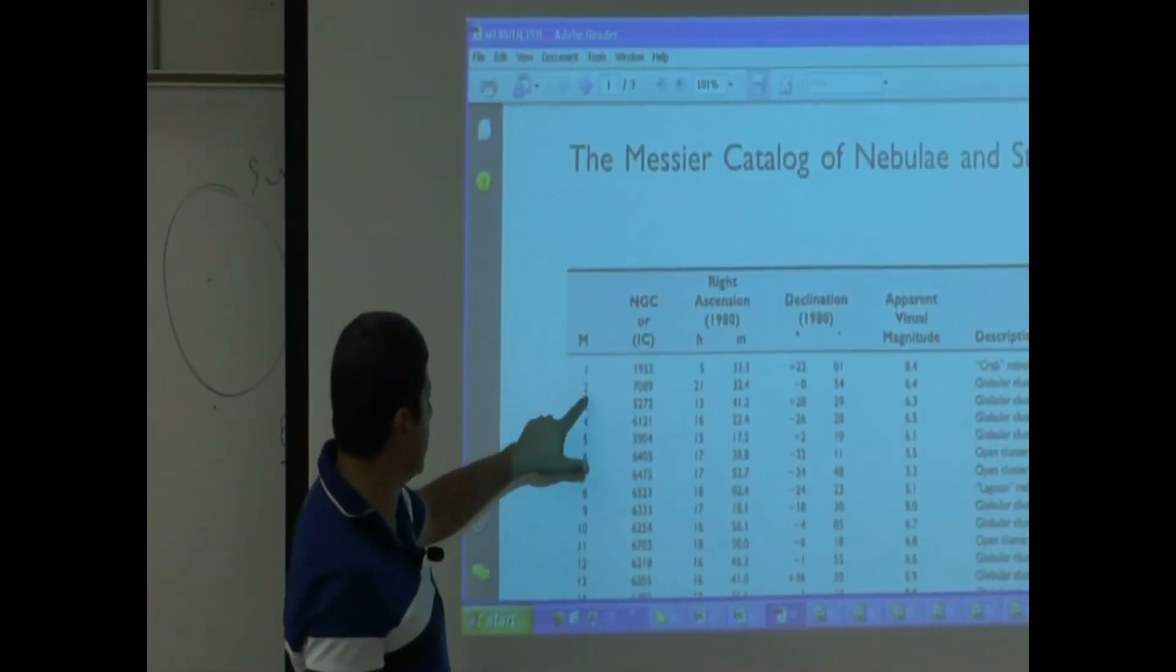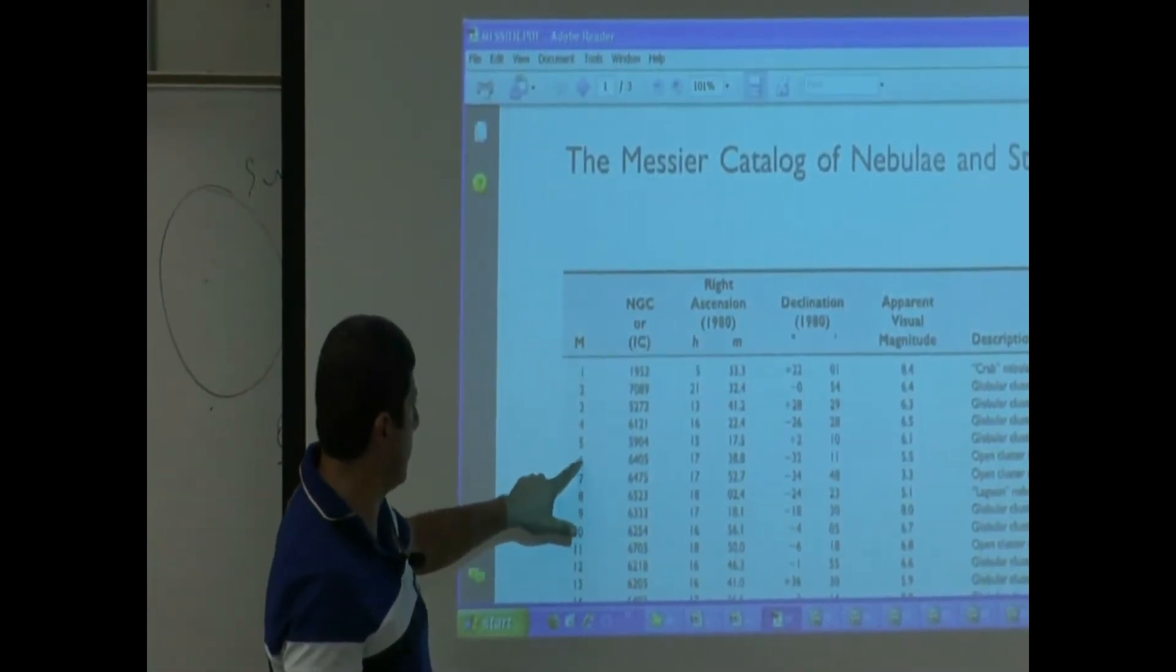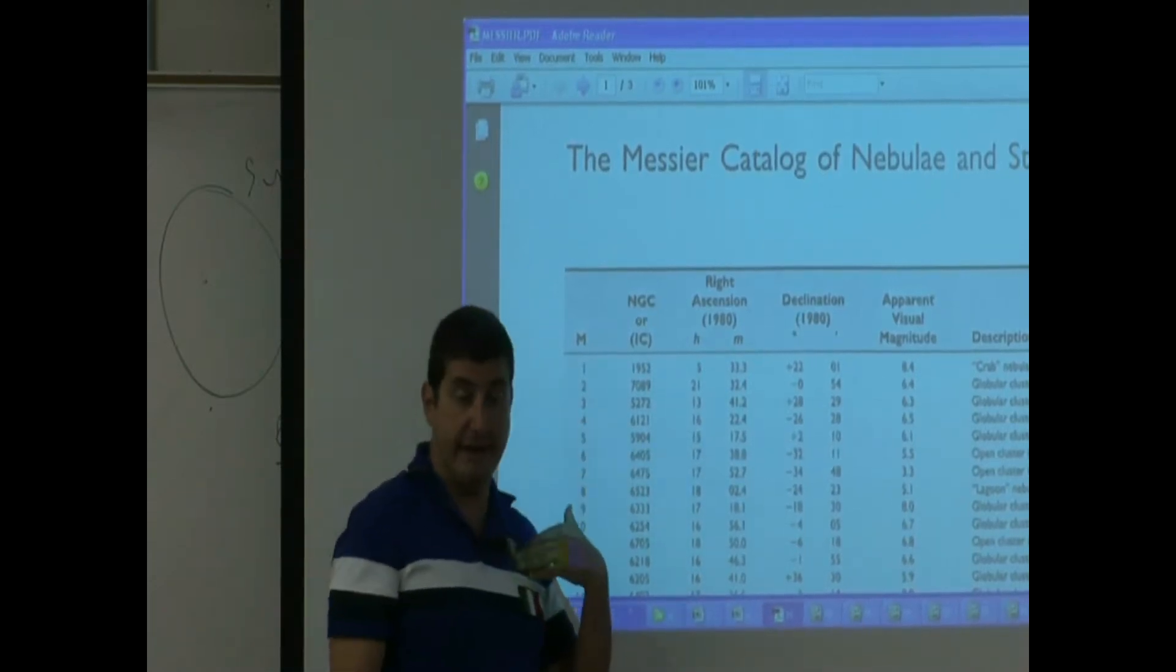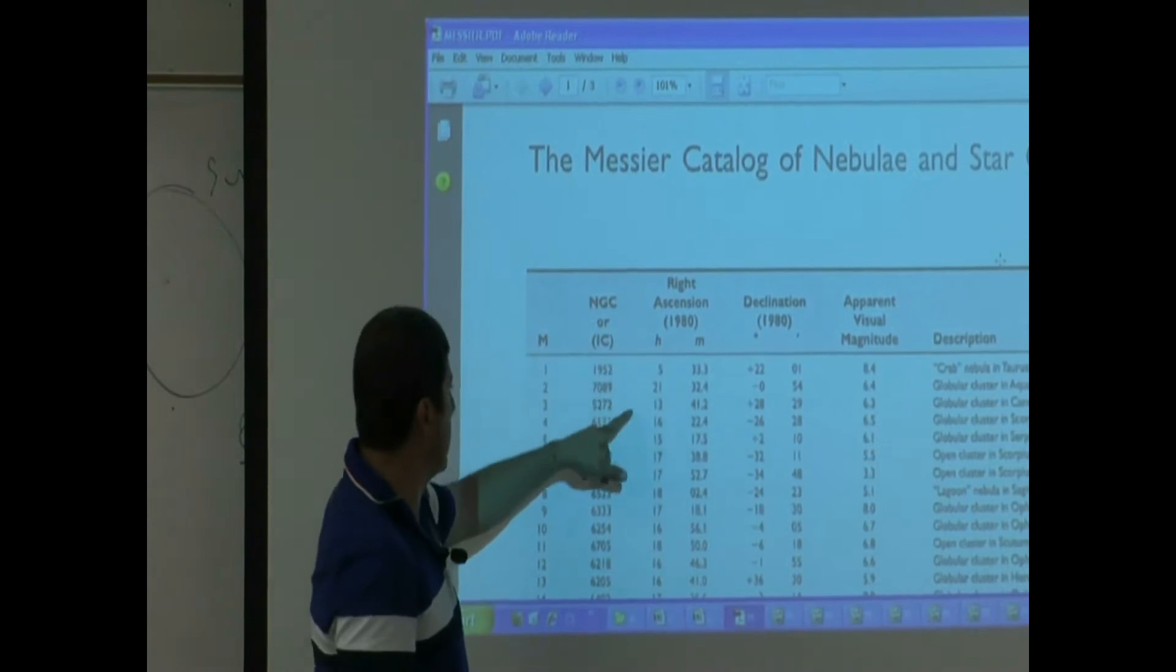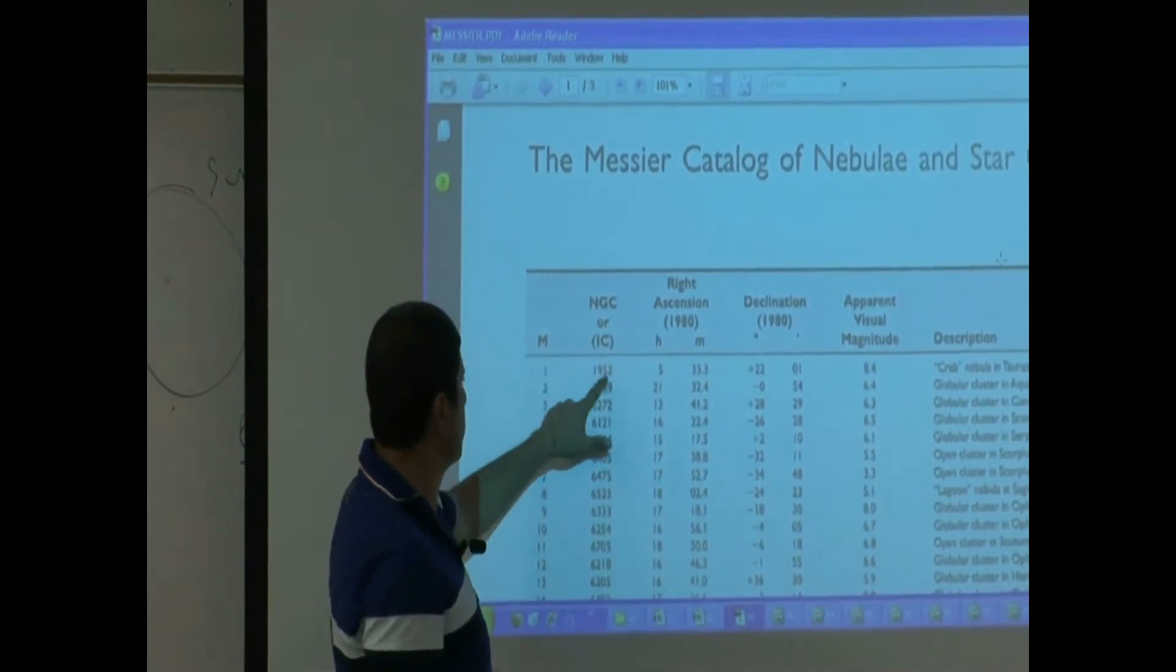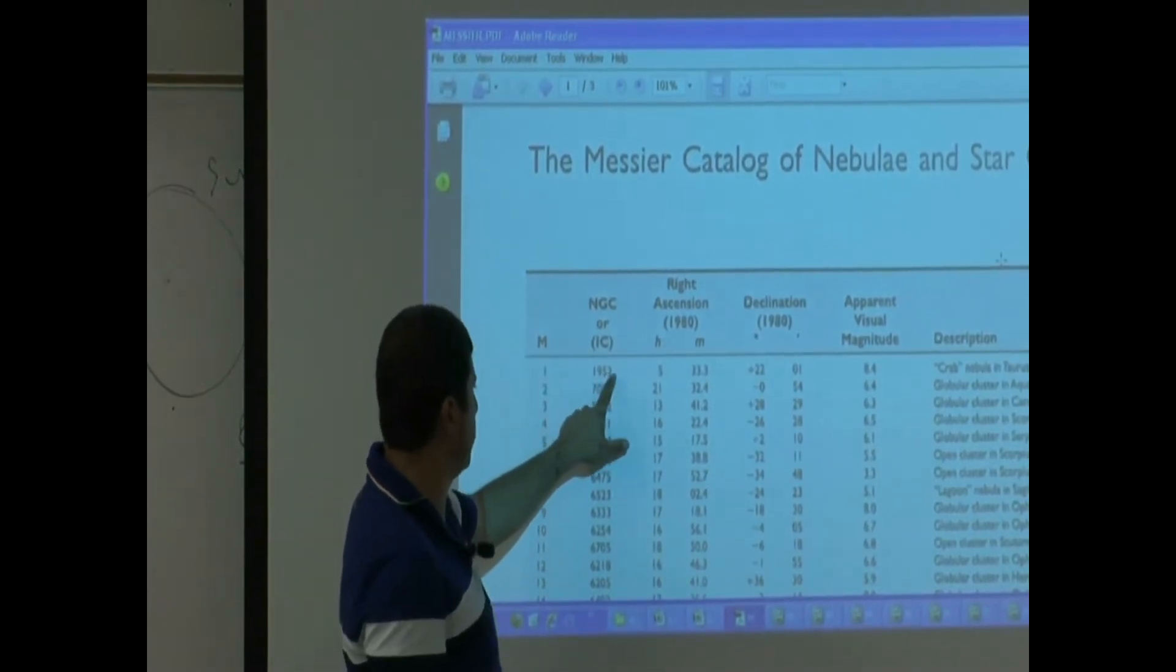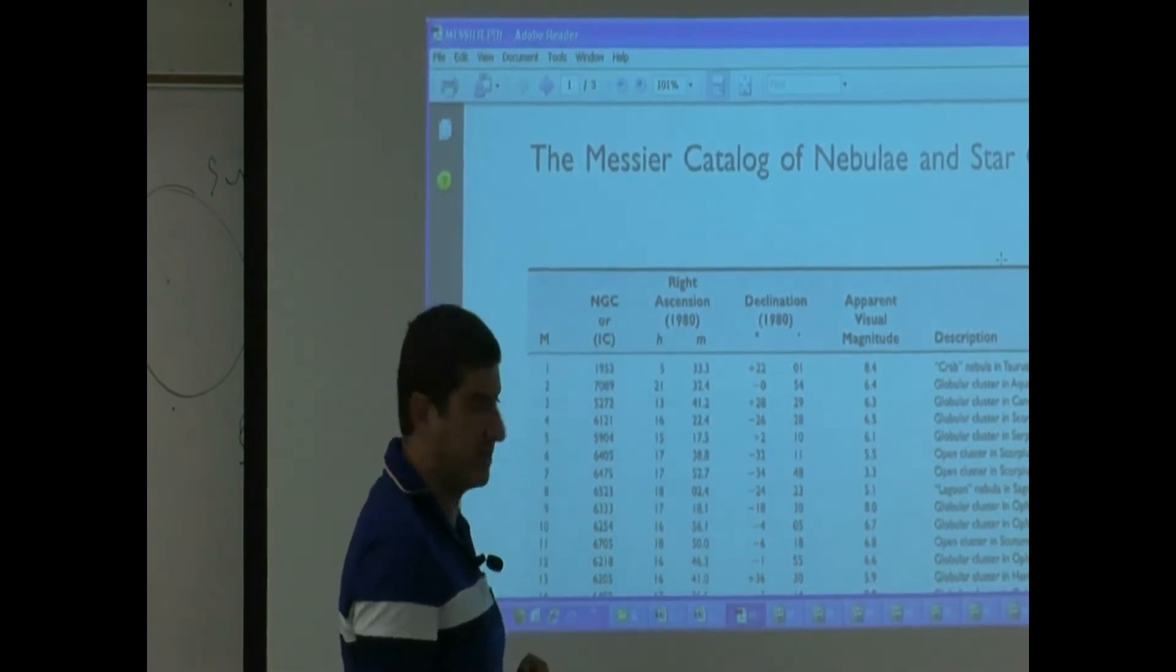Messier object one, Messier object two, Messier object three, so on. Now we have a much bigger list called the New General Catalog. So Messier object one corresponds to the 1952 object in the New General Catalog.